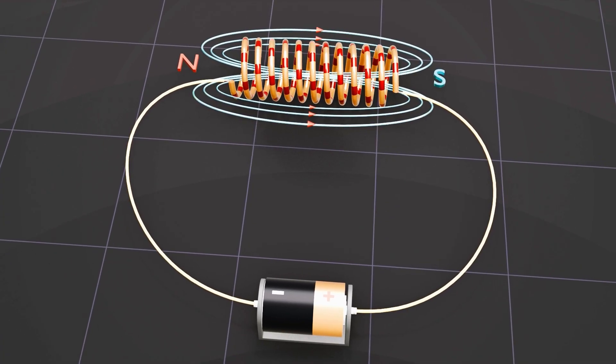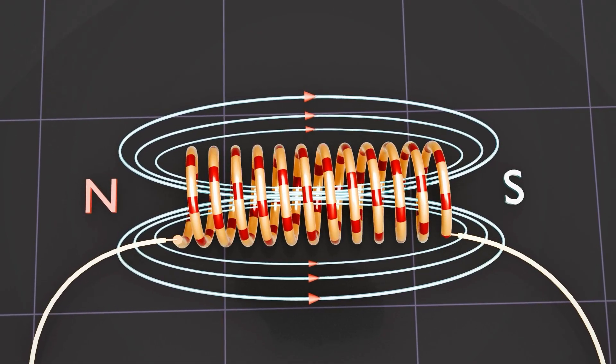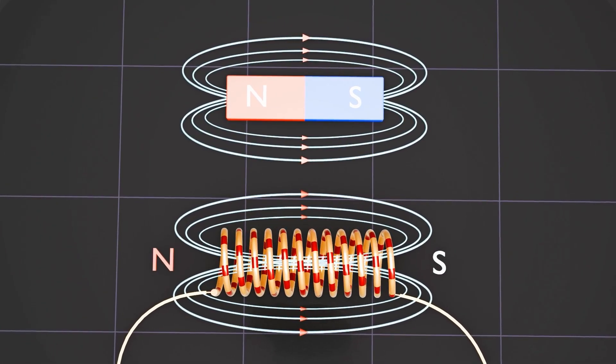This turns it into an electromagnet. Inside the solenoid, the magnetic field lines are straight, evenly spaced, and all point in the same direction, just like the magnetic field of a bar magnet.